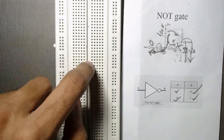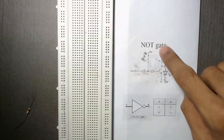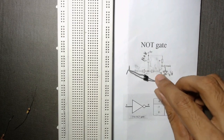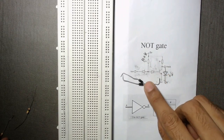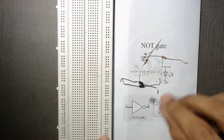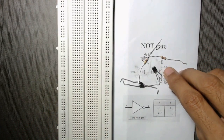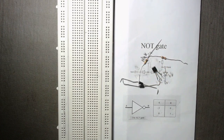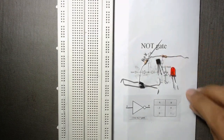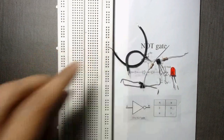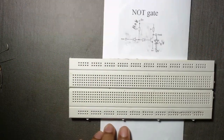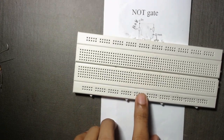Now let us implement it on a breadboard. To implement this circuit we need two diodes — we have used 1N4007 diodes — a 100K resistor, a 1K resistor, one NPN transistor (I have used BC547, but you can use any NPN transistor), one LED, some connecting wires, a 9 volt battery, and of course a breadboard.